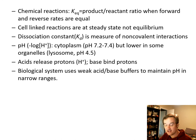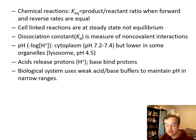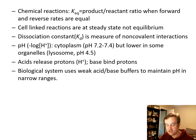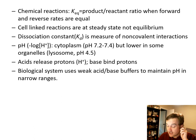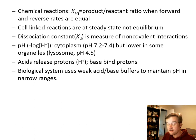The dissociation constant KD is a measure of non-covalent interactions. One thing to also consider is pH in these systems, which affects the rate of reactions and the amount of protons available. The pH in the cytoplasm is about 7.2 to 7.4, very close to neutral, but can be lower in some organelles — for example, the lysosome where the pH is as low as 4.5.